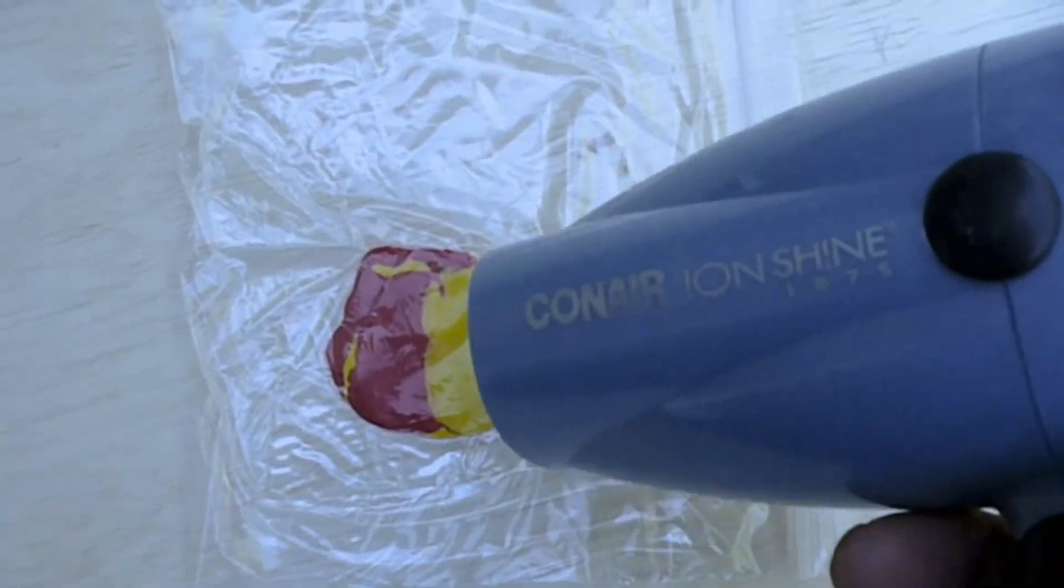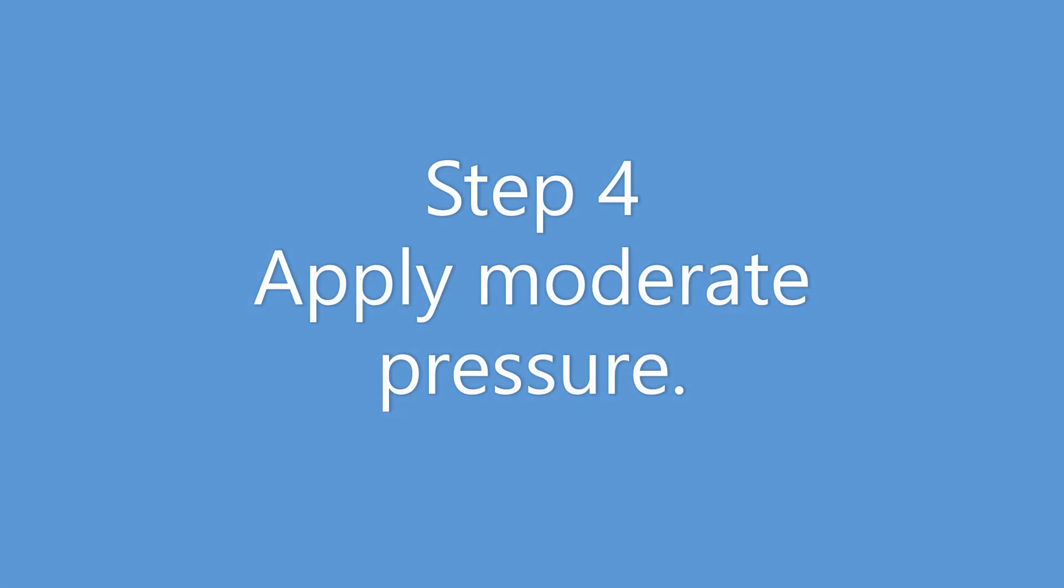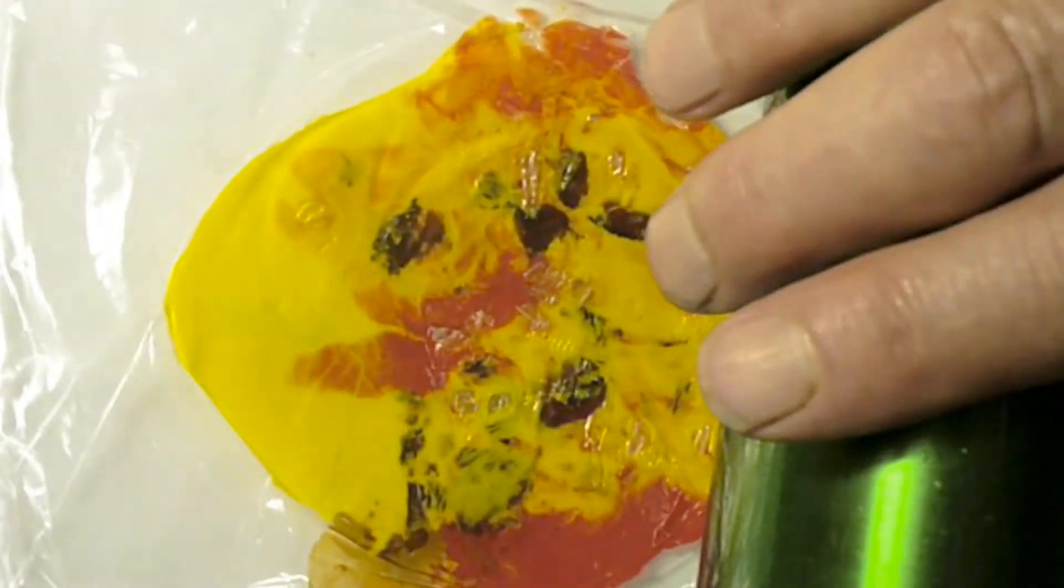You want it to be very soft but not runny. Apply moderate pressure with anything cylindrical. A water bottle works great. Push really hard because you want the sample to be very thin.